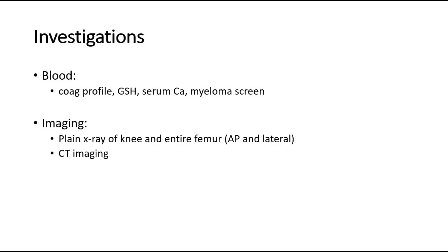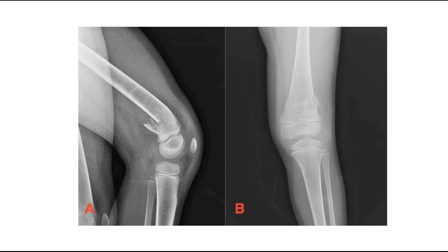For imaging, anteroposterior and lateral plain film radiographs of the knee and entire femur should be requested. If there is any intra-articular extension, CT imaging is helpful to evaluate intra-articular involvement. These are some X-ray pictures: picture A shows the lateral view and picture B shows the AP view of a left-sided distal femur fracture.